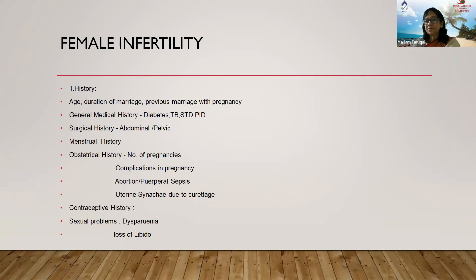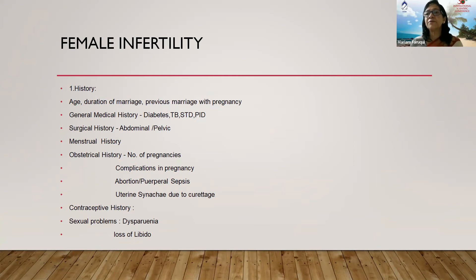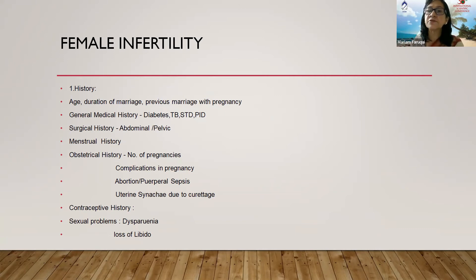STD and PID must be evaluated and treated properly. Surgical history is very important — any lower abdominal or pelvic surgery can cause adhesions obstructing both tubes. Patients may be unable to recall their operations, so we ask parents or review ultrasound findings. A missing ovary on ultrasound may indicate a previous ovarian cystectomy.